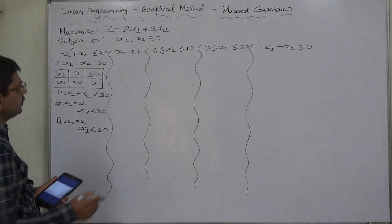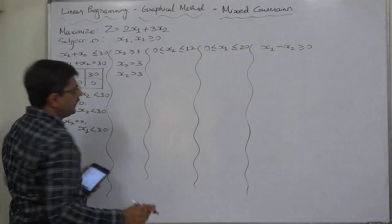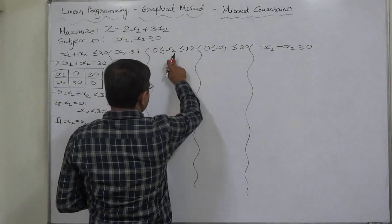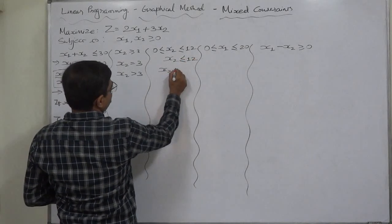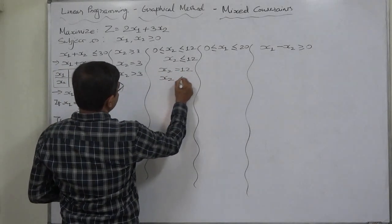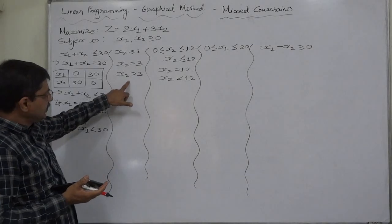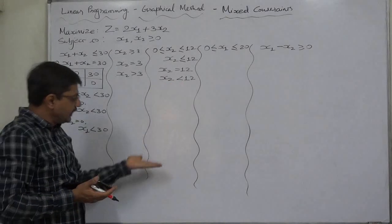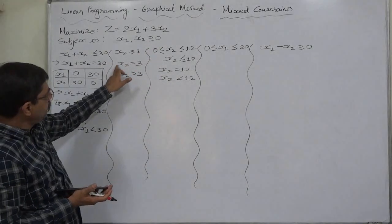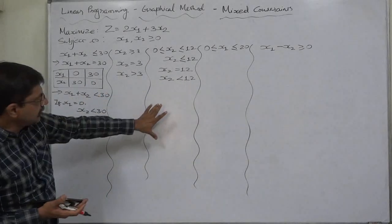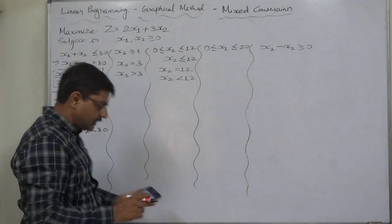x2 greater than or equal to 3 means x2 equals 3 rigidly for any value of x1, and x2 greater than 3. x2 less than or equal to 12 means x2 equals 12 for any value of x1, and x2 less than 12. These two inequalities — x2 greater than 3 and x2 less than 12 — mean the shaded region will be between these two lines because of the different signs.